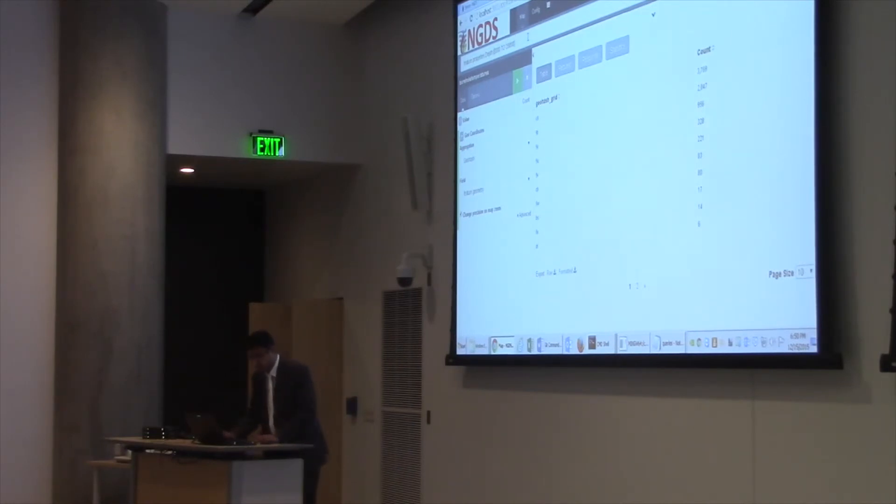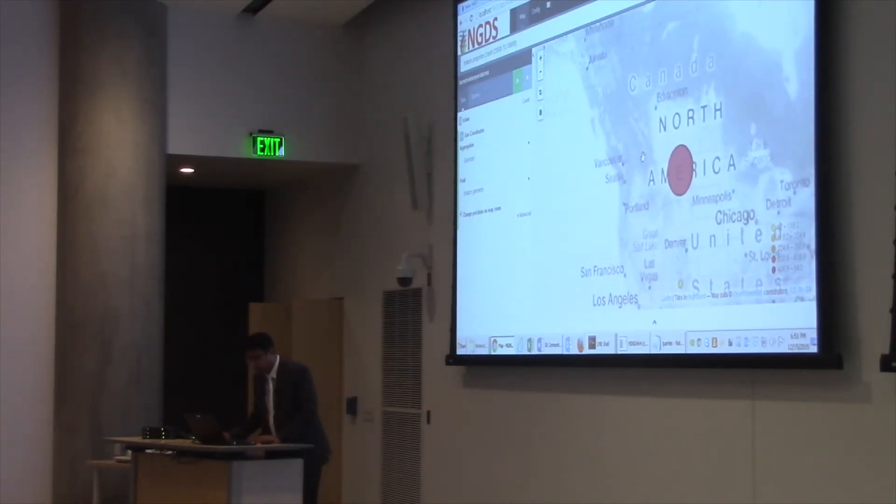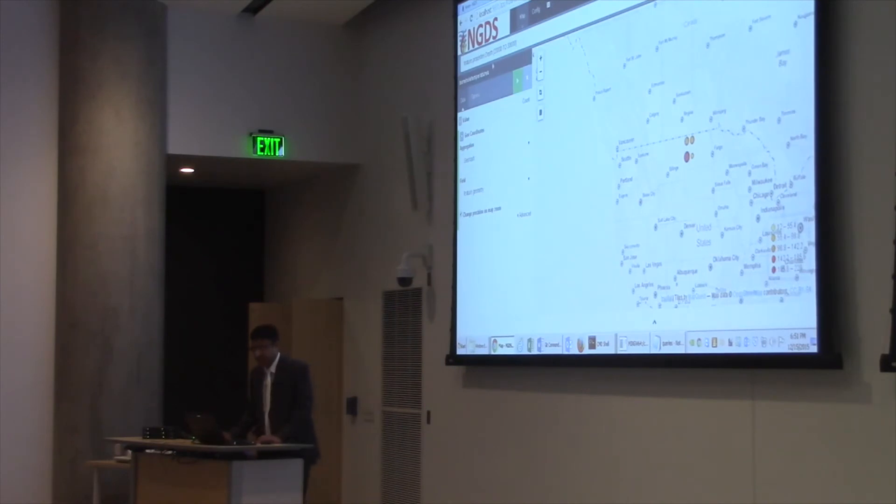You can also change the range values. For example, I choose, give me the borehole temperature where the depth lies between 20,000 to 30,000 meters. This time, it returns 580 features. And now you can check. Here are the borehole temperatures where the depth is between 20,000 and 30,000.